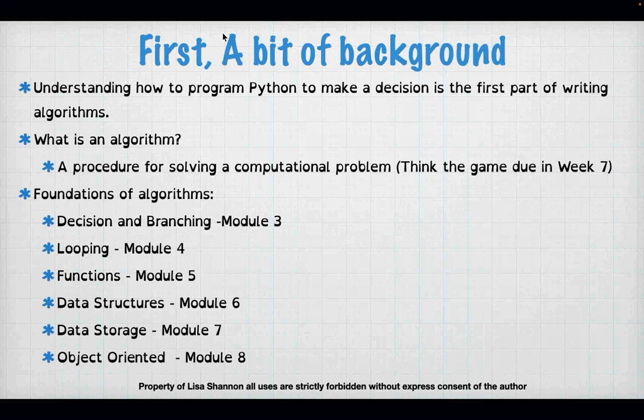Module four is looping, which is making decisions repeatedly with the data changing. Module five is functions — that's about encapsulating, writing an algorithm and putting it into something that you can name. Module six is data structures, because you don't just have a single variable — you have databases and oodles of information to manage in some structured way. Module seven is data storage, file handling. And eight is object-oriented programming, which is taking all the other stuff and packaging it into something with a name.